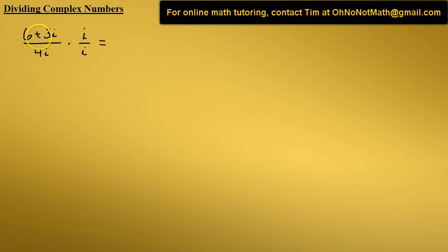Now we distribute this i across the numerator. 6 times i is 6i plus 3i times i is 3i squared. In the denominator, we have 4i times i, which is 4i squared.